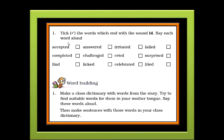Now here the task for you is to tick the words which end with the sound 'id'. Say each word aloud. From the given words, you will have to find out the words which end with the sound 'id' and put a tick mark against those words. Let's begin then children. The words accepted, completed, irritated, and celebrated end with the sound 'id'.